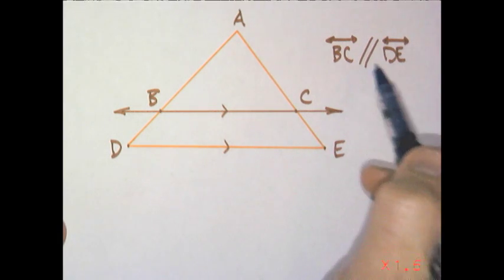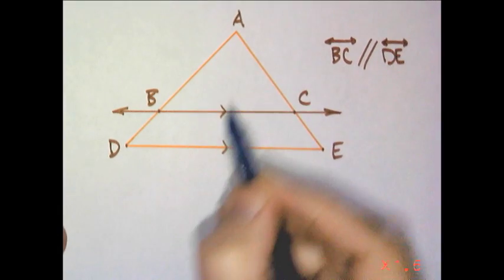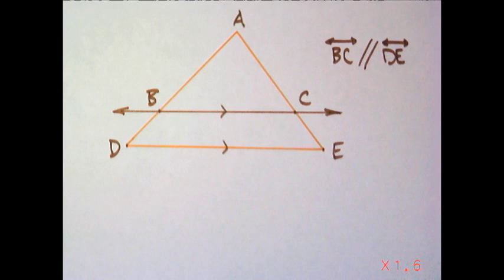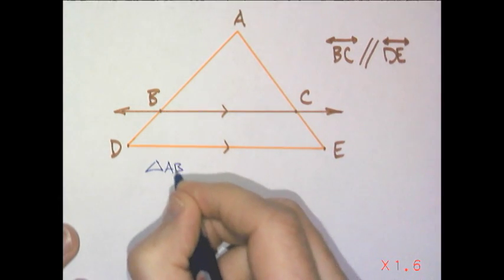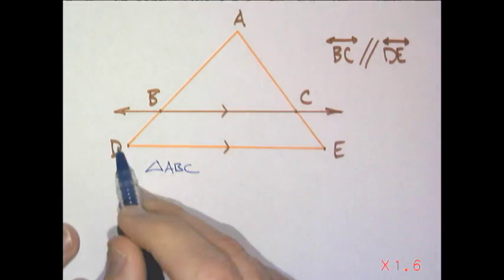I've marked it here, BC parallel to DE. And the question that I want to ask you right now, are these two triangles now similar? Triangle ABC and triangle ADE.